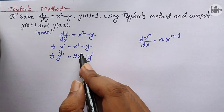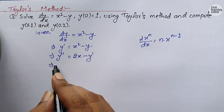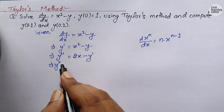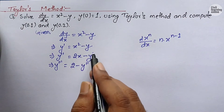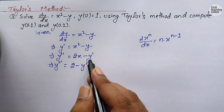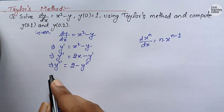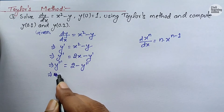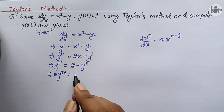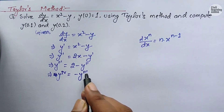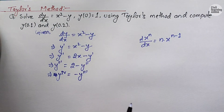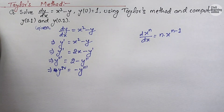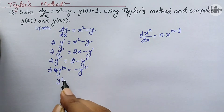Similarly, we need to find the third derivative. We will have y''' equals 2 minus y'', because the derivative of y' with respect to x becomes y''. Again, we find the fourth derivative: y⁴ equals minus y''', because the third derivative of y is y'''.